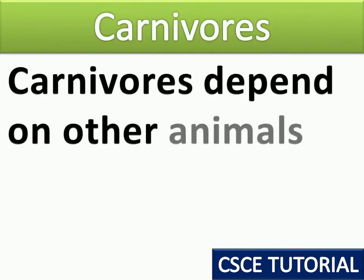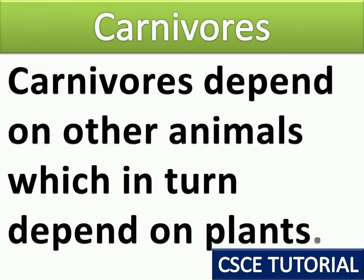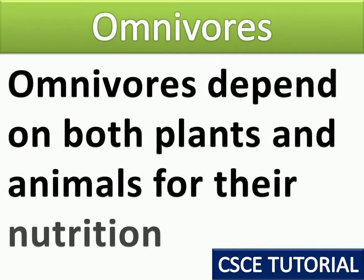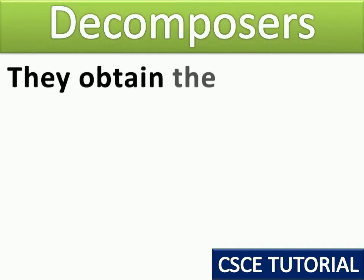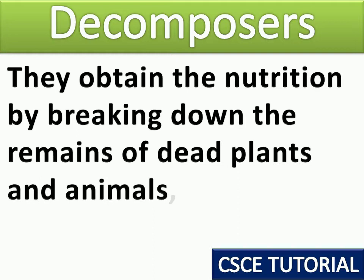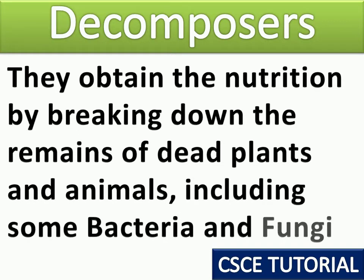Carnivores depend on other animals, which in turn depend on plants, for their nutrition. Omnivores eat both plants and animals for their nutrition. Decomposers obtain their nutrition by breaking down the remains of dead plants and animals, including some bacteria and fungi.